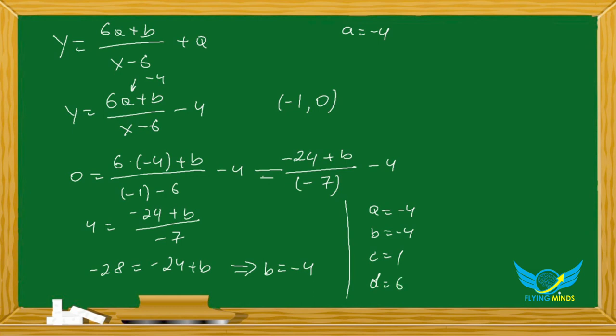So our answer is y equals negative 4 times x minus 4 over x minus 6.